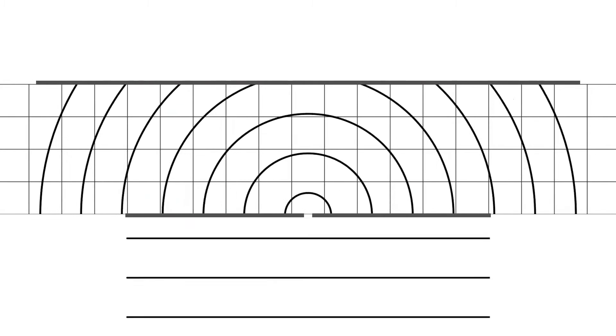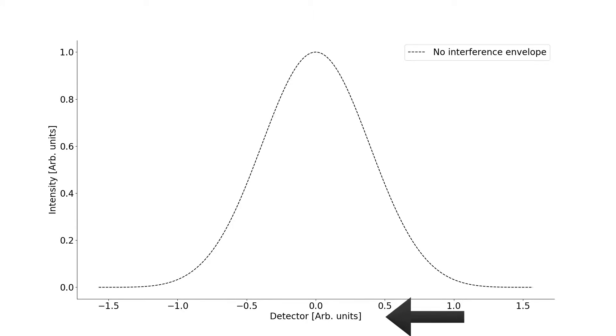The pattern produced with this signal is just a normally distributed wave. The x-axis is the position of the backside, the detector, and the y-axis is the intensity of the waves.